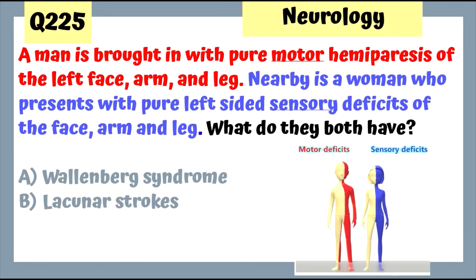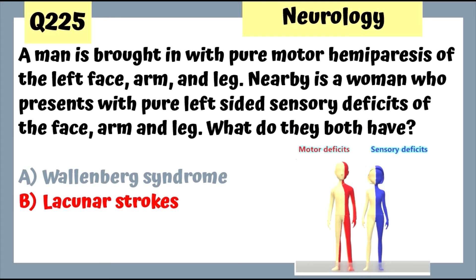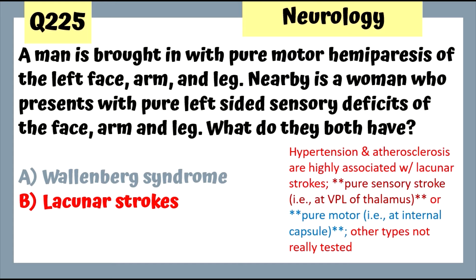Question 225: A man has pure motor hemiparesis of the left face, arm, and leg; a nearby woman has pure left-sided sensory deficits of the face, arm, and leg. Both have lacunar strokes. Lacunar strokes present with either pure motor or pure sensory deficits. Pure sensory stroke occurs at the VPL of the thalamus; pure motor stroke at the internal capsule.